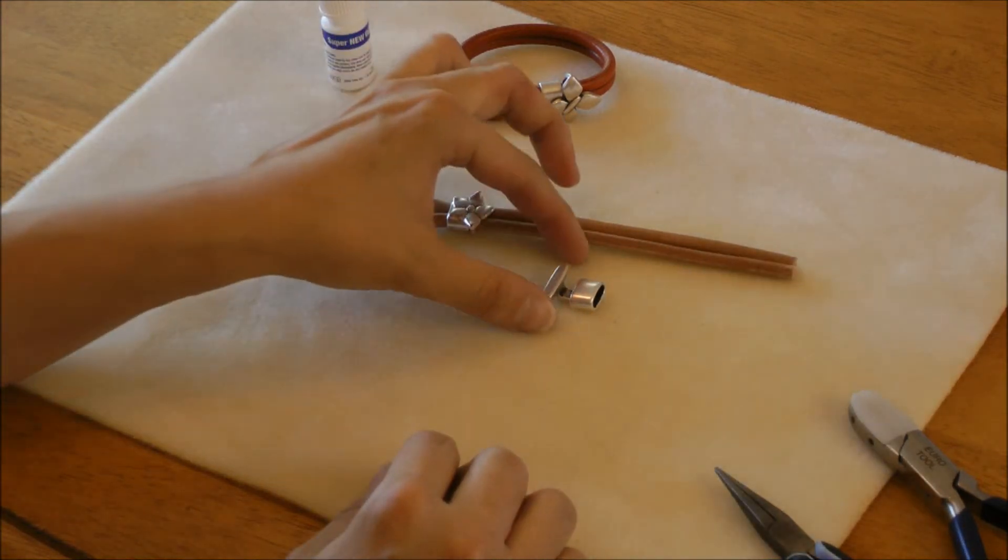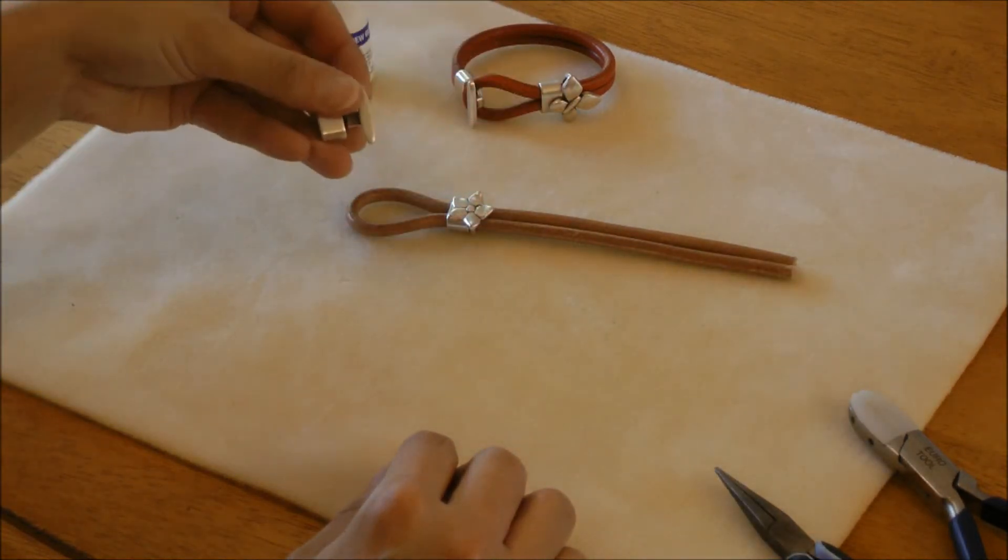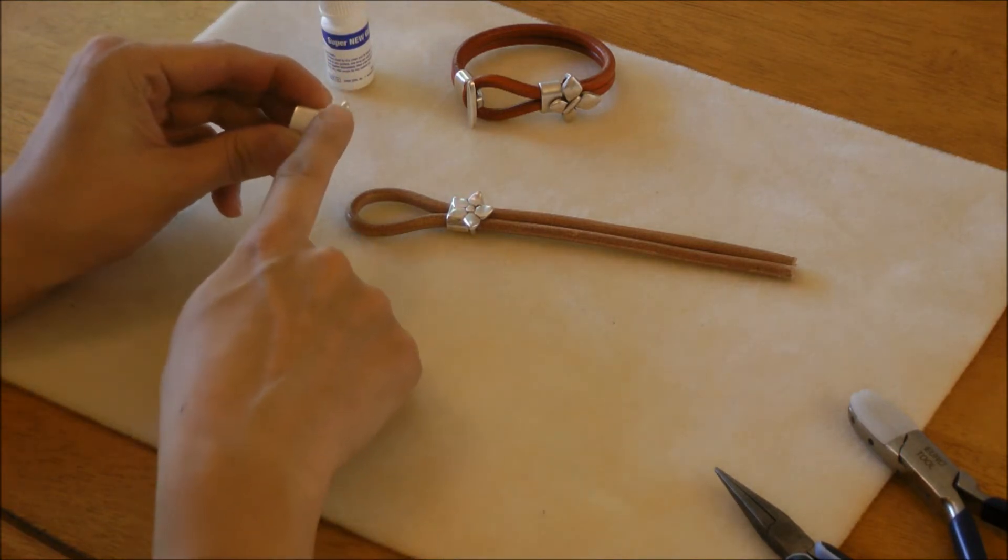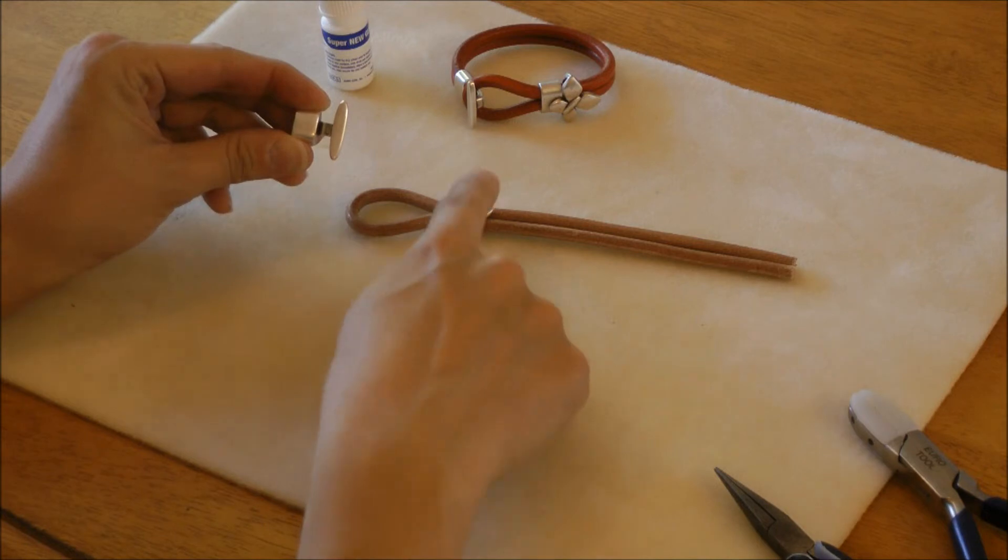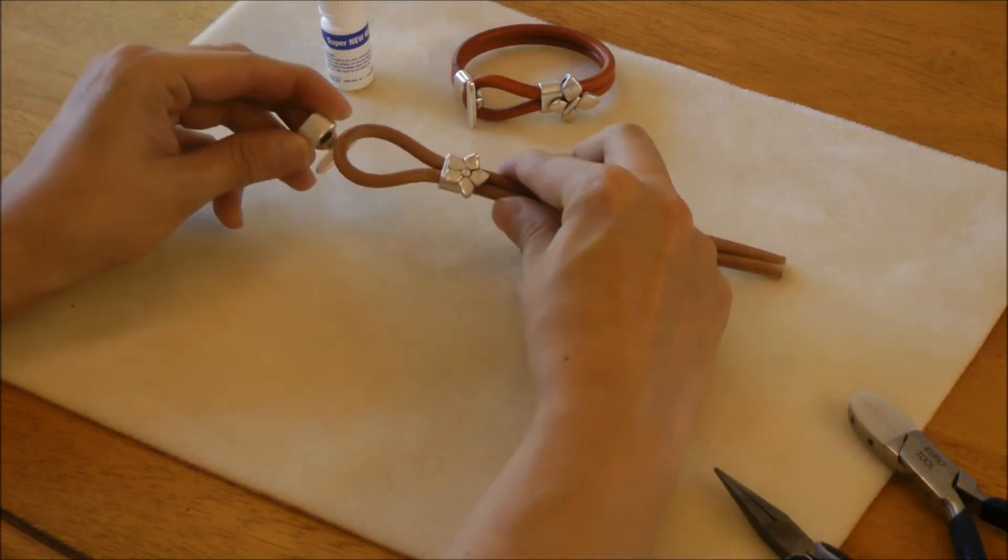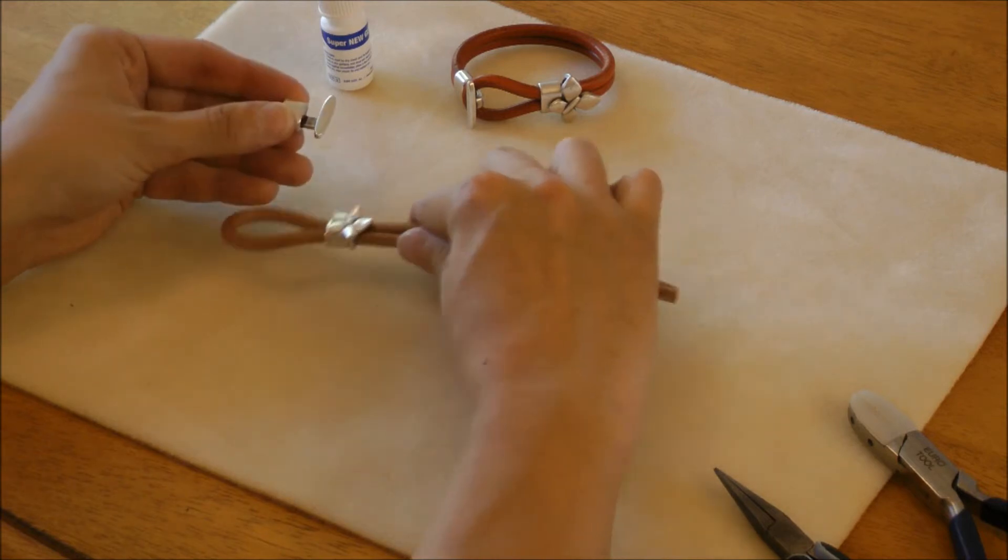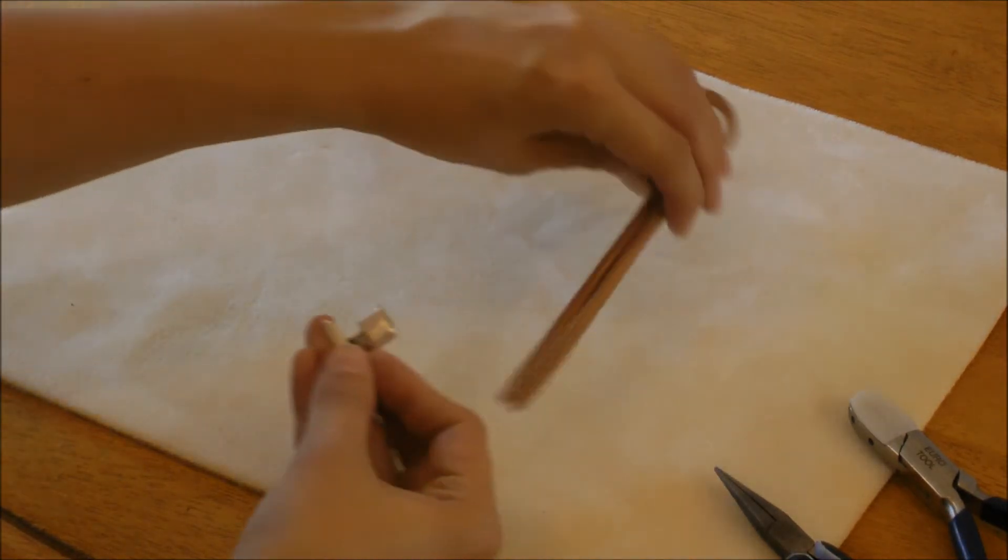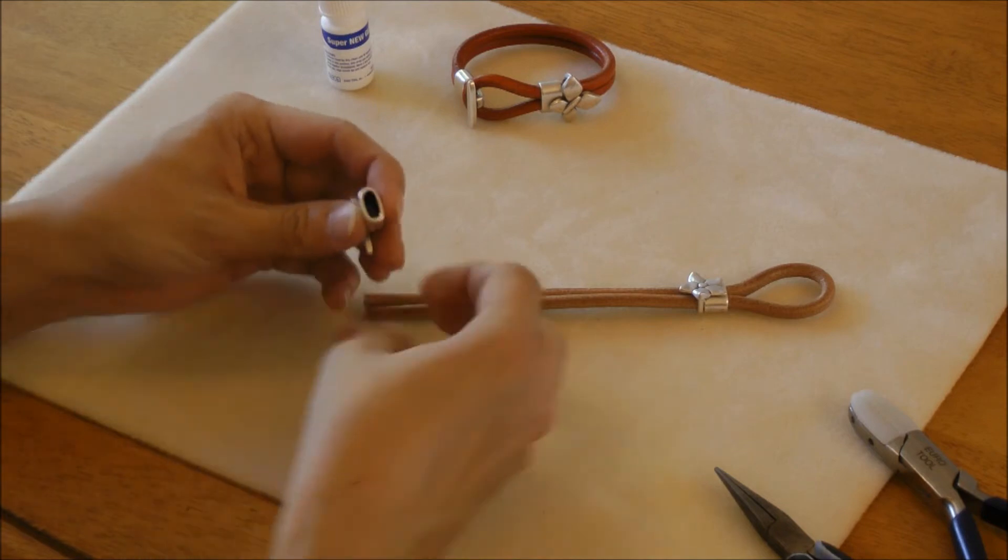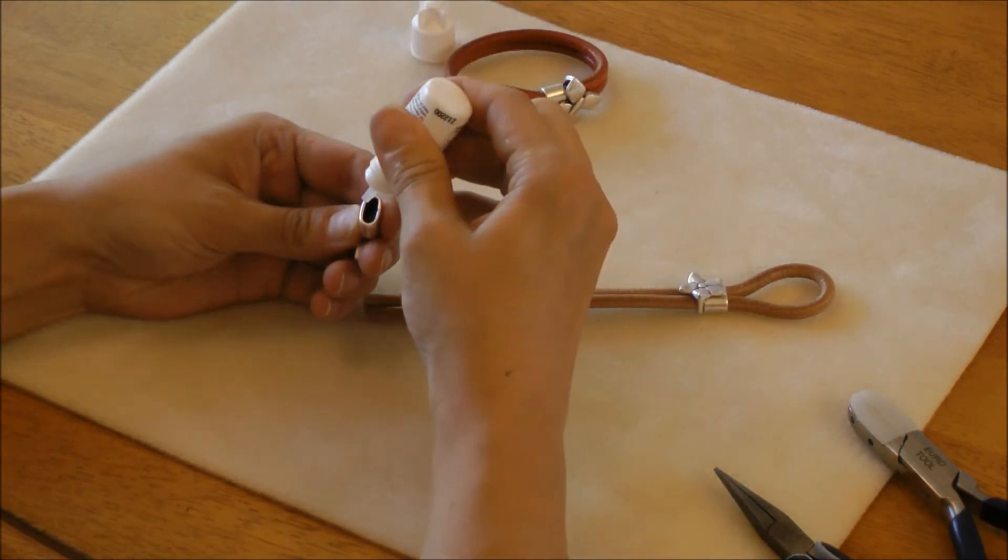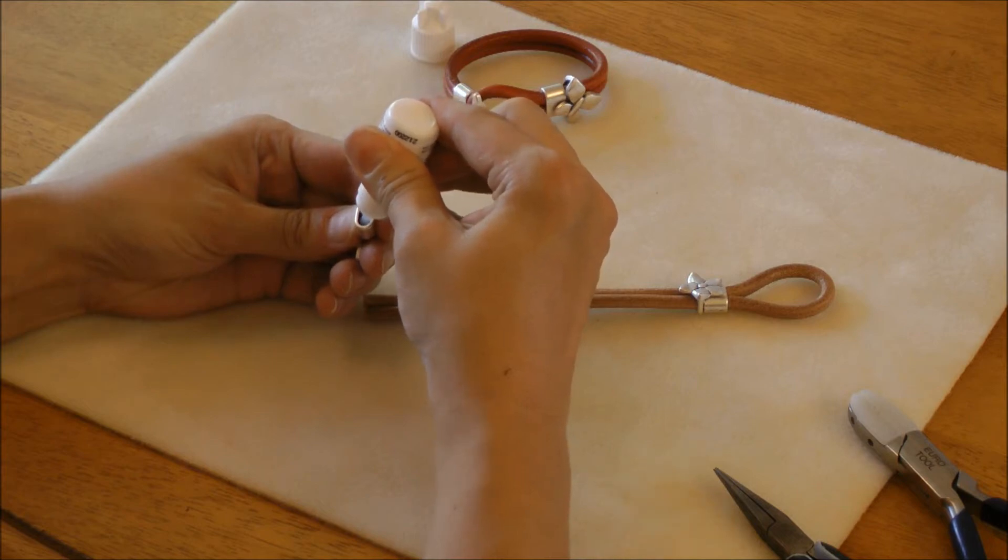The last step is adding the T-bar piece of the clasp. Before you put any glue in, you want to make sure that this bar is up, facing the same direction as the flower, as it will feed through here when you're finished. So making sure that it's in the right direction, you can take your super glue and add a couple drops to the base of this clasp piece.